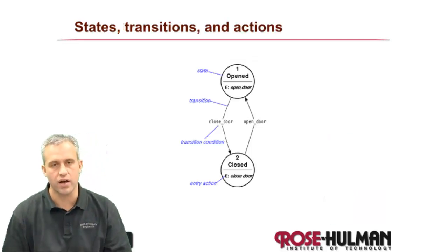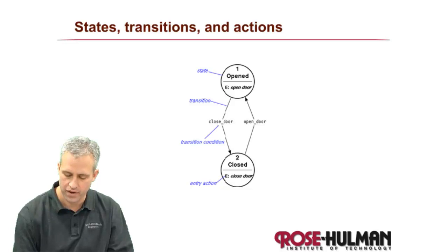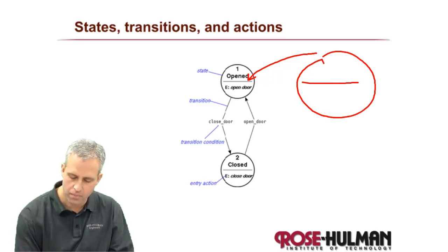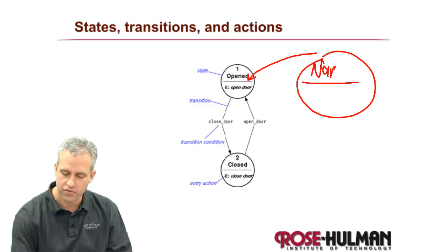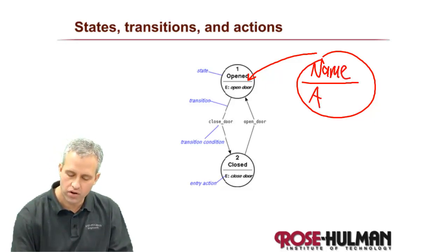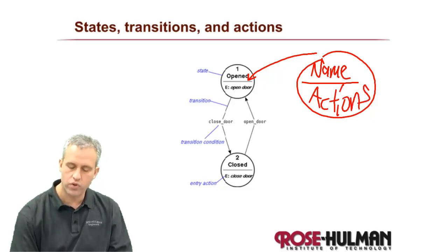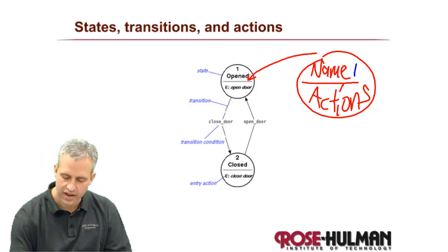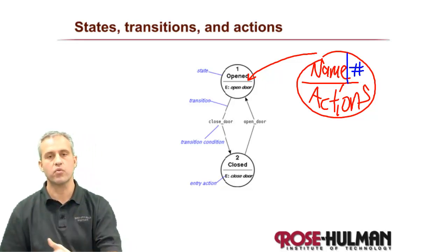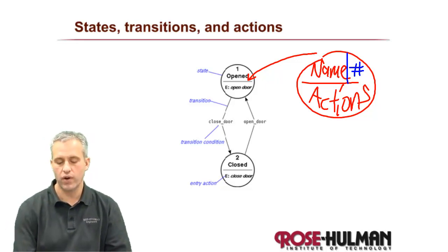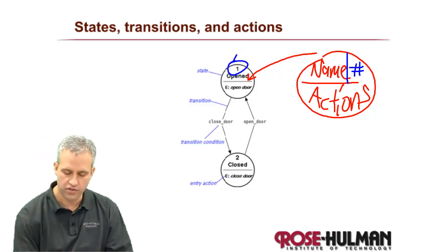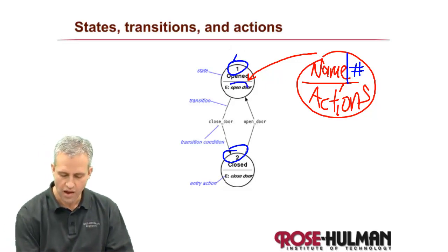Finite state machines have been around for a long time. People use them not only to express ideas, but they also put in details so that they can implement them better. The main detail that gets added for implementation is that in each state, people put a bar. Above the bar, they just put a name for the state, like you saw in the last slide. Below the bar is where the actions are going to go. The actions are important because it helps you understand what should be going on, and it's also important when you implement it. The last thing that gets added is that states typically get a number — it's a way to not only identify it, but also to help you implement this thing. Here you can see a simple two-number system for a door opening and closing.